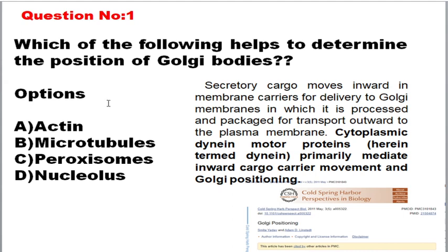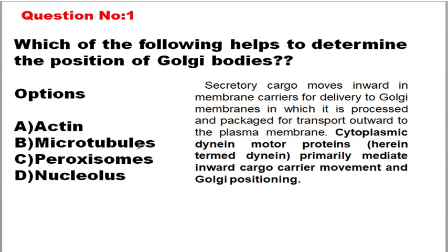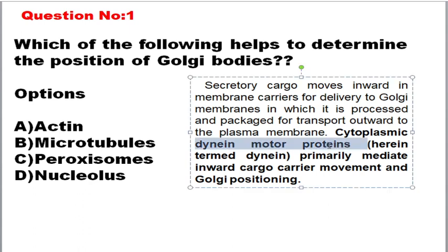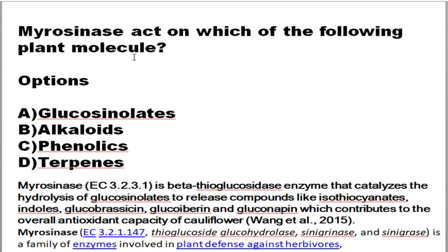The question asks which of the following helps in determining the positioning of Golgi bodies. The options are actin, microtubule, peroxisome, and nucleus. You should eliminate peroxisomes and nucleus, and the confusion is between actin and microtubule. You can refer to the article by Smita Yadav published in Cold Spring Harbor CSH Perspectives 2011. The answer is microtubules, because the cytoplasmic dynein motor protein belongs to the microtubule class and is involved in mediating inward cargo movement and positioning the Golgi body.